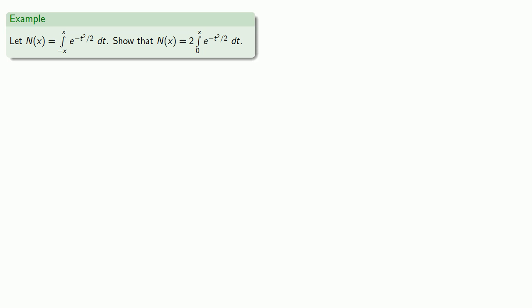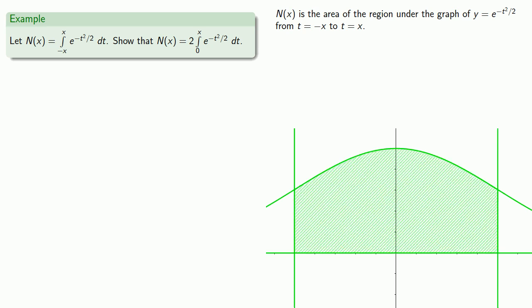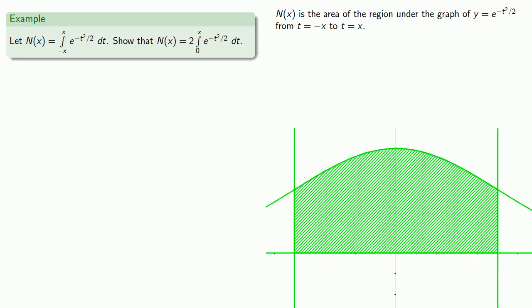The geometric content of the definite integral says that n of x is going to be the area of the region under the graph of y equals e to the minus t squared over 2 above the x-axis, from t equals minus x to t equals positive x. However, it's useful to note that y equals e to the minus t squared over 2 is actually symmetric about the y-axis.